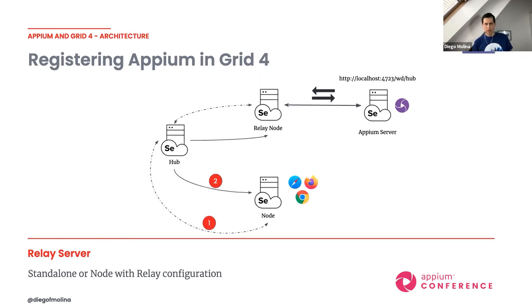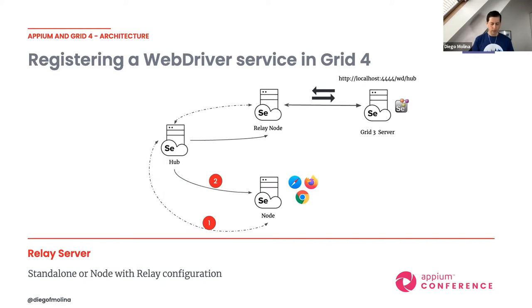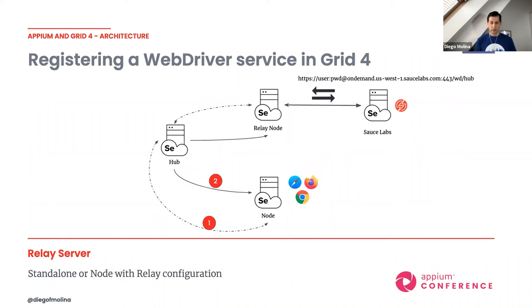One interesting aspect of this approach is its flexibility. The relay can connect to anything that speaks WebDriver. For example, if you're migrating from Grid 3 to Grid 4, you can connect your Grid 3 as the relay endpoint and migrate slowly at your own pace, moving components step by step. Another option: if you have a cloud provider account, you can configure that cloud service as a relay node endpoint — so tests that can't be fulfilled locally are served in the cloud.